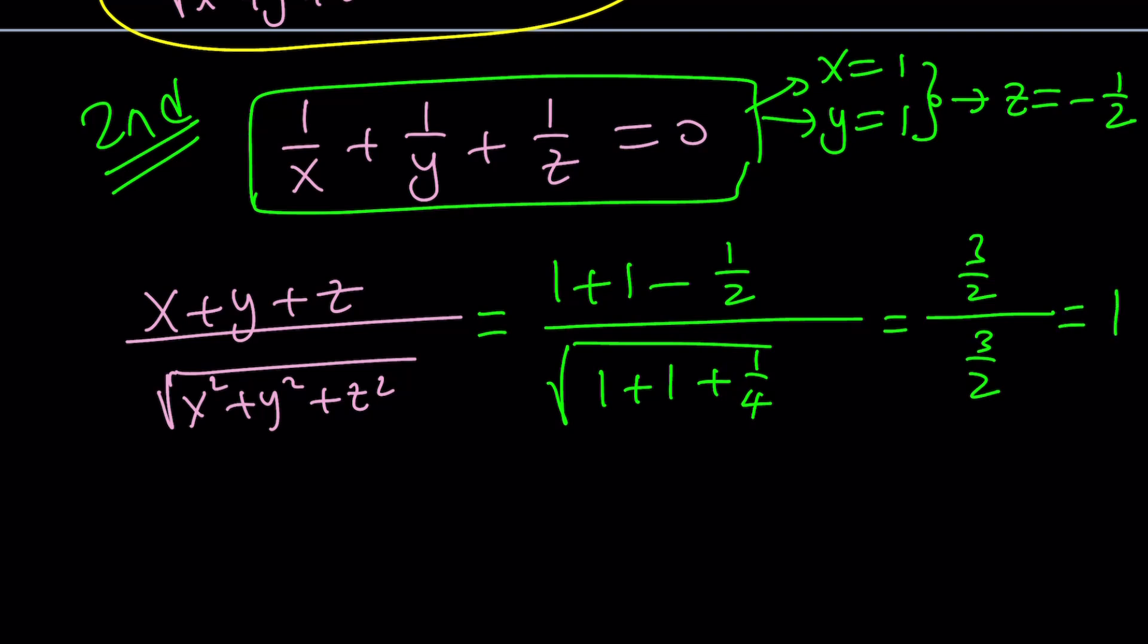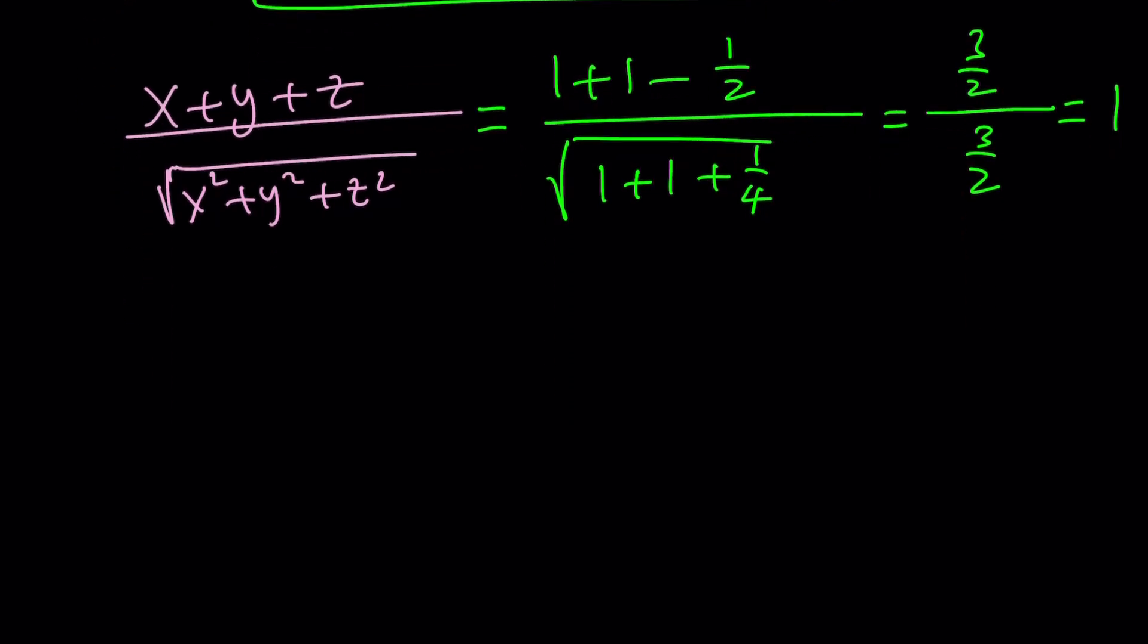Well, with the first method, we've got two answers. So, is one of them invalid? Could the answer be negative 1? Let's check it out. First of all, think about this. If the bottom, the denominator, is always positive, to get a negative answer, x plus y plus z needs to be negative. Can we pick values such that this sum is negative?